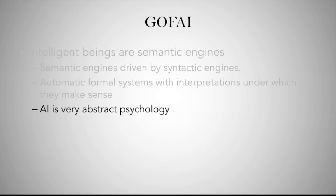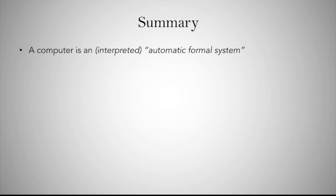Thus the task of AI in the context of cognitive science is to carry out a very abstract kind of psychology — to understand the architecture of the formal system that underlies our biological mind. Summing up what we've been saying in this series of videos: according to Haugeland, a computer is an interpreted automatic formal system.